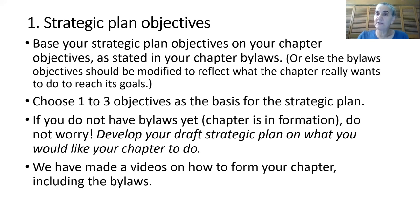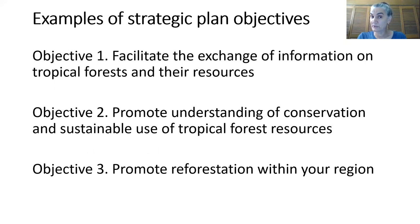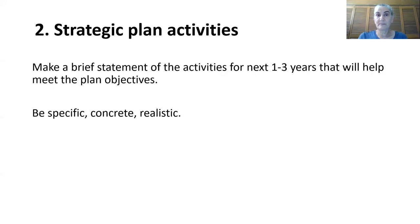If you don't have bylaws yet and your chapter is in formation, don't worry about it — develop your strategic plan on what your chapter would like to do. We have made a video on how to form your chapter, including the bylaws. Here are some examples of strategic plan objectives you might want to use: objective one, facilitate the exchange of information on tropical forests and their resources; objective two, promote understanding of conservation and sustainable use of tropical forest resources; objective three, promote reforestation within your region.